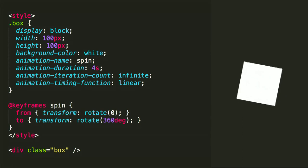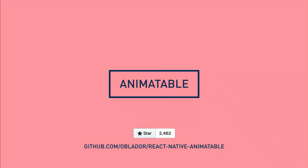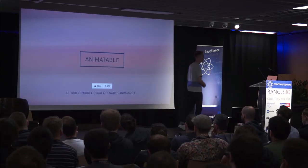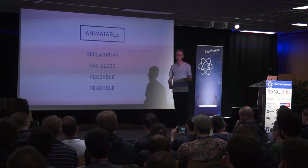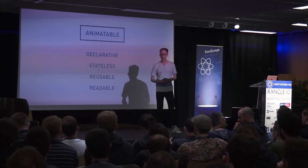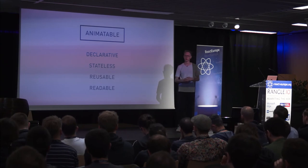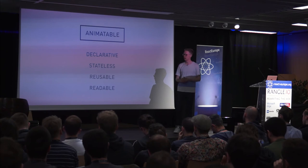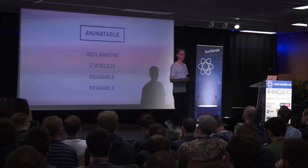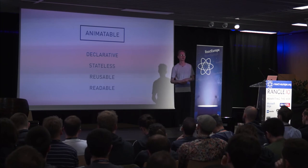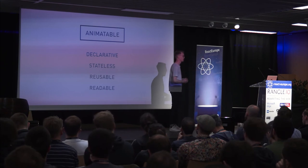For React Native, there's a library called Animatable which implements this same API. It has the advantages of being very simple to use, declarative, and stateless — you can use it with stateless components. Since you define keyframes outside the component, it's highly reusable. And since all the code is in one place in the render function, it's easy to scan and see what it does — whereas with the Animated API, you have stuff in the constructor, lifecycle functions, and render.